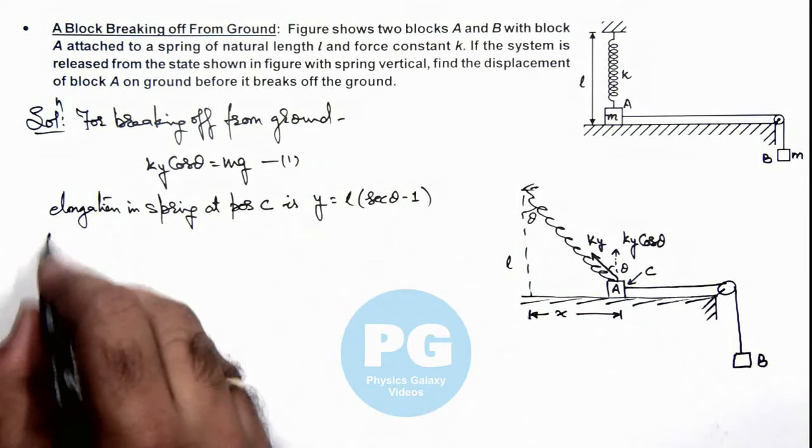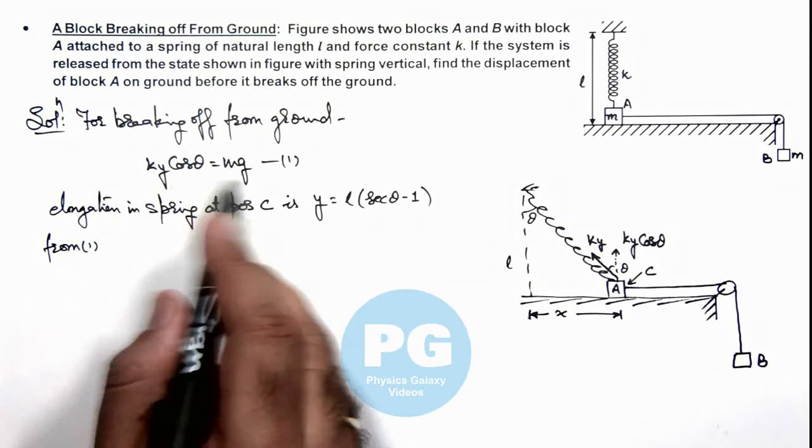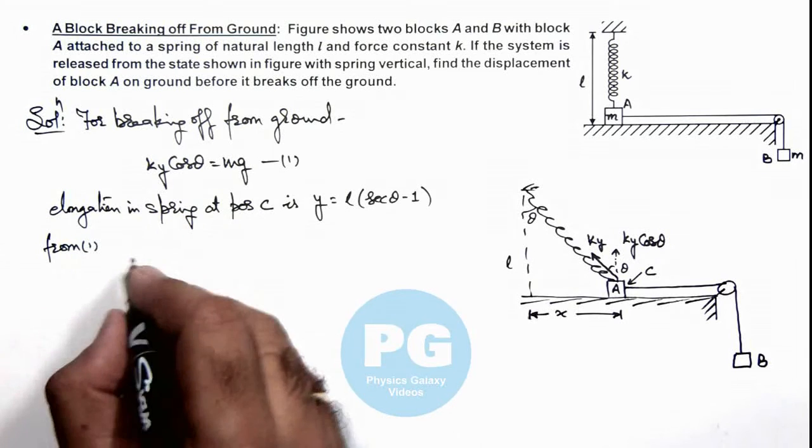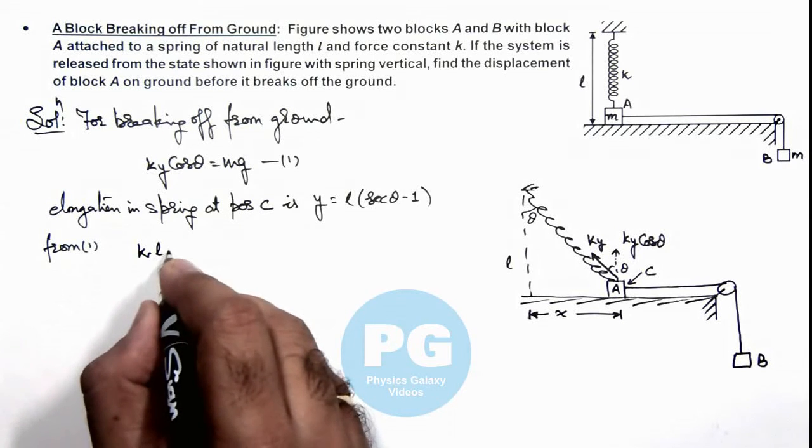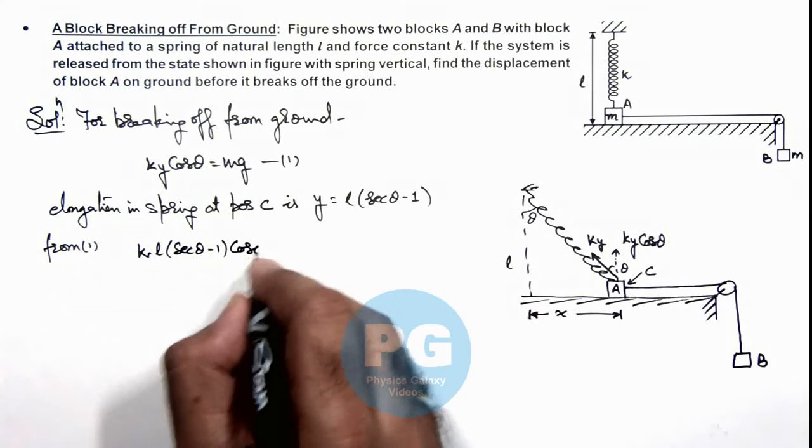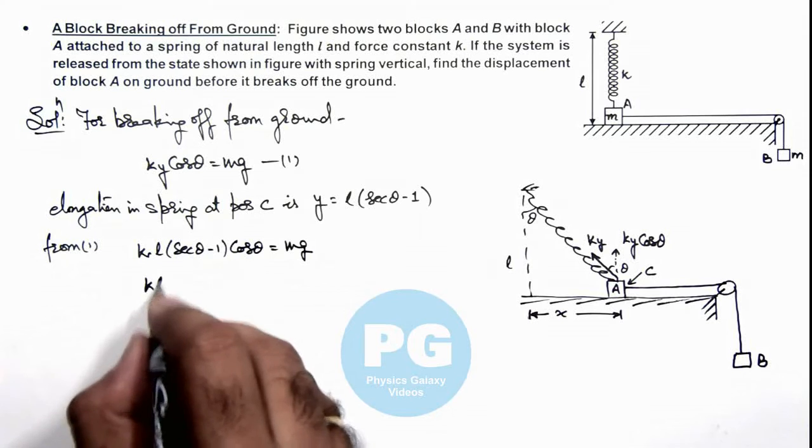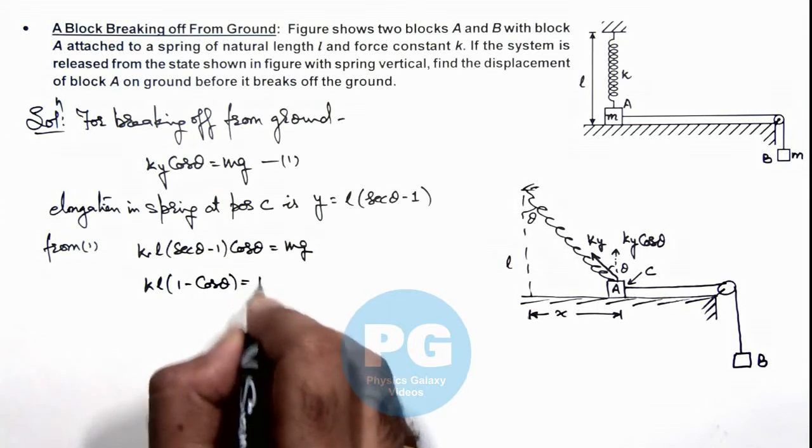Now from equation 1, we are having k y cos theta is m g. If we substitute the value of y, this is k times l (sec theta minus 1) multiplied by cos theta equals m g. On simplifying this, k l (1 minus cos theta) equals m g.